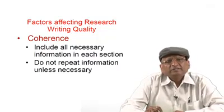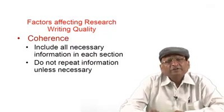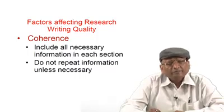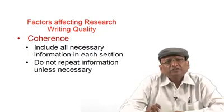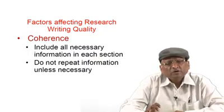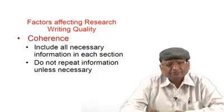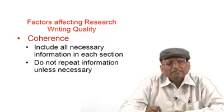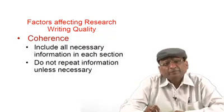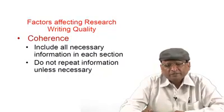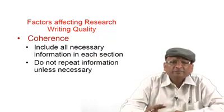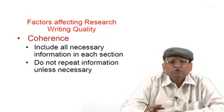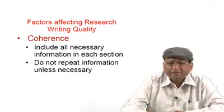We will now discuss the factors which affect research writing quality. The first one is coherence. Coherence means we want all the information at one place — each section should contain information only with reference to that particular section. We should not try to repeat information unless necessary. So two things are important in coherence: the information should be related to the section, and there should be no repetition of information.